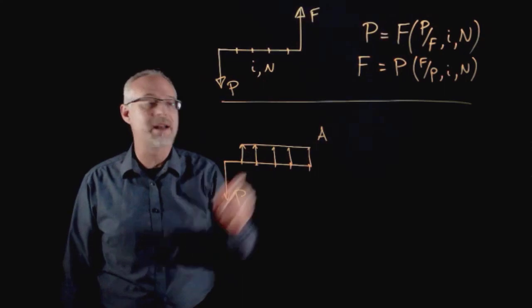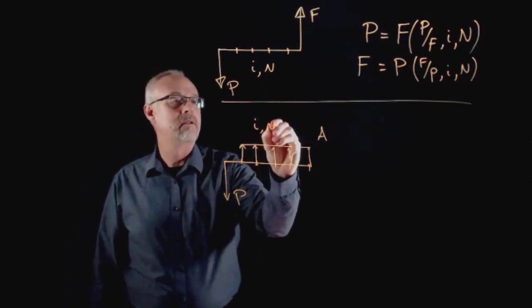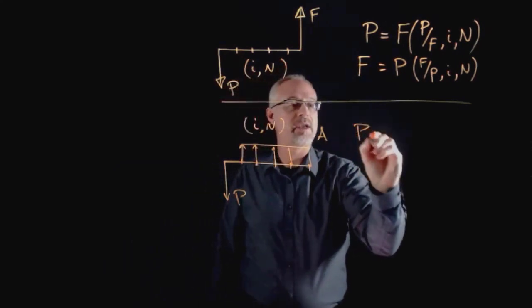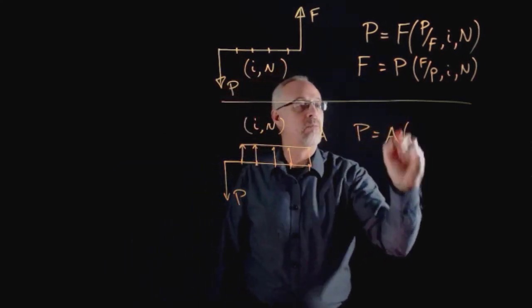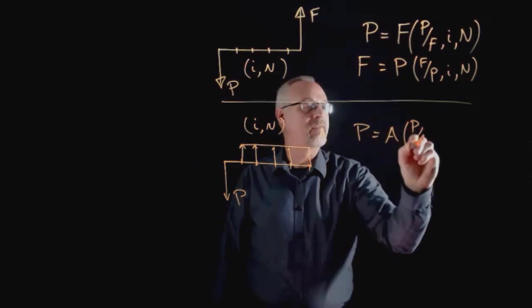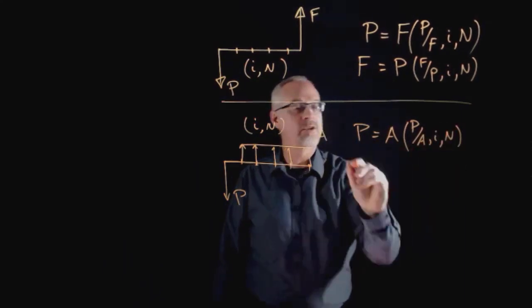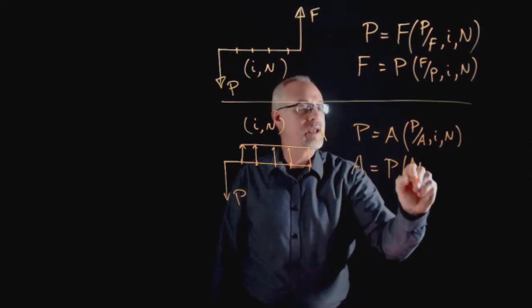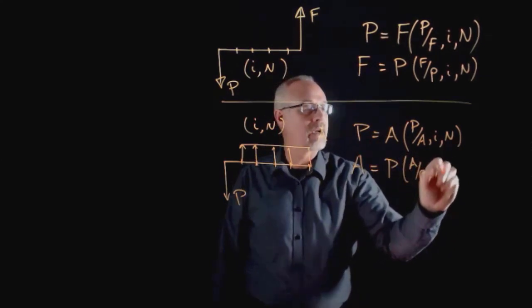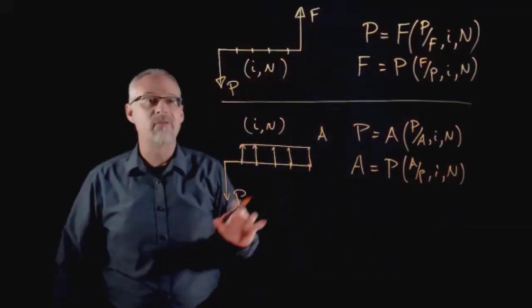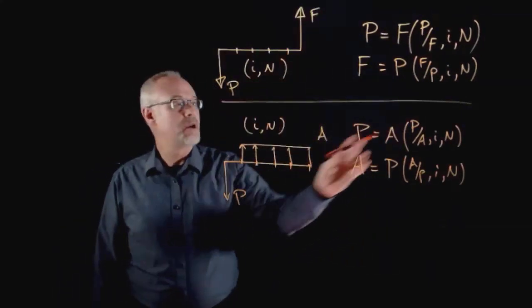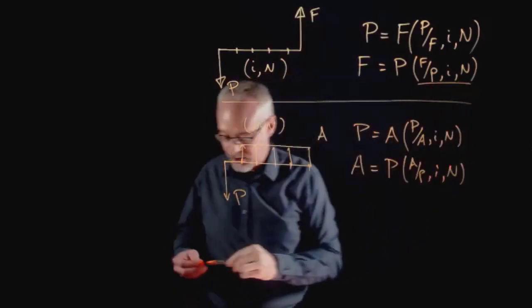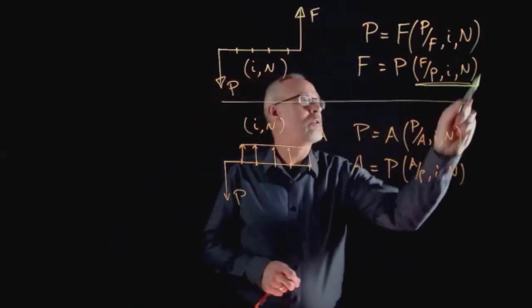I still have an i and an n. The formulas we'd use here are P equals A multiplied by the P given A, i, n factor, or the annuity equals the present value times the A given P factor for i and n.